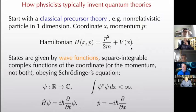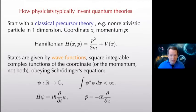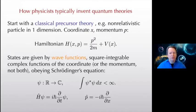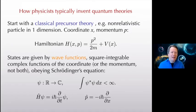There's a map from the space of classical theories to the space of quantum theories, but it's neither one-to-one nor onto. You can get multiple quantum theories from one classical theory, and a single quantum theory from multiple classical theories. So it's not a very well-defined map, but we gloss over that when first learning quantum mechanics.